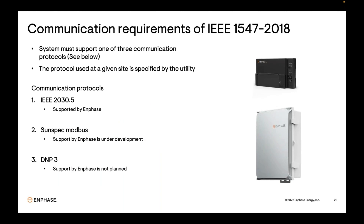There are three potential communication protocols for compliance, and the protocol used at a given site is specified by the utility. IEEE 2030.5 is currently supported by Enphase and is the protocol used in all states that have already adopted the standard — this is what we expect all states to use going forward. SunSpec Modbus support is currently under development by Enphase. DNP3 has historically only been used for very large utility-scale sites, and Enphase does not plan to support DNP3.